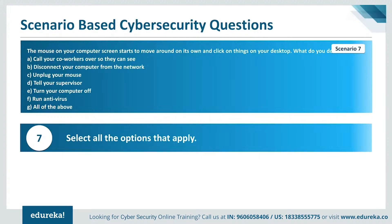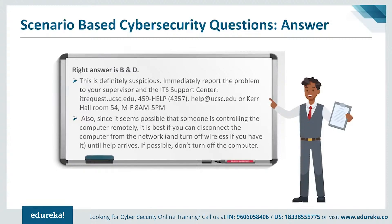Scenario 7: The mouse on your computer screen starts to move on its own and click on things on your desktop. Options include calling a coworker, disconnecting from the network, unplugging the mouse, telling your supervisor, turning the computer off, or running an antivirus. The correct options are B and D — disconnect the computer from the network and tell your supervisor. Since someone may be controlling the computer remotely, disconnect it from the network and turn off wireless if possible, until help arrives. If possible, don't turn off the computer.